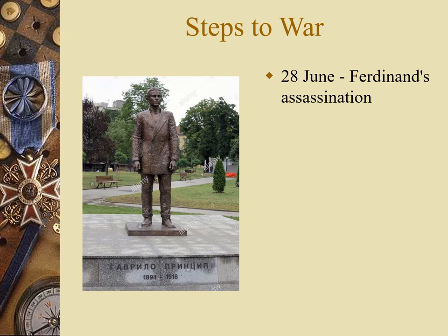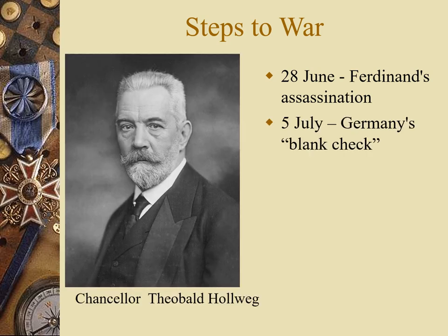Let's talk about the steps to war. June 28, 1914: Archduke Franz Ferdinand is assassinated by Gavrilo Princip — there's a monument that has been destroyed and rebuilt as opinions of him have changed. With that, the chancellor of Germany, under Kaiser Wilhelm II, basically offered Austria absolute support — what we traditionally call a blank check.